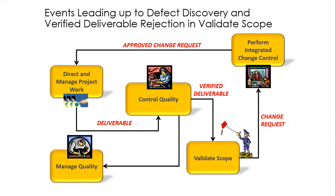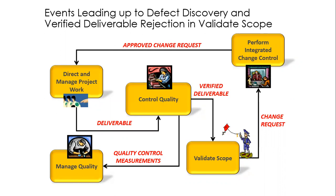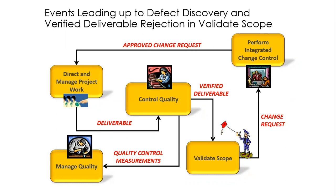I want you to take a look at this feedback loop from control quality. In control quality, we take those quality control measurements and try to identify what the measurements are, and we send that to manage quality. In manage quality, we assess those quality control measurements. Those measurements could be any measurements that were recorded during inspection — could be taking a look at data in a control chart, or taking a look at the temperature of coffee that was found to be undrinkable. Ultimately, you're going to come up with an understanding of why the quality control measurements are what they are.